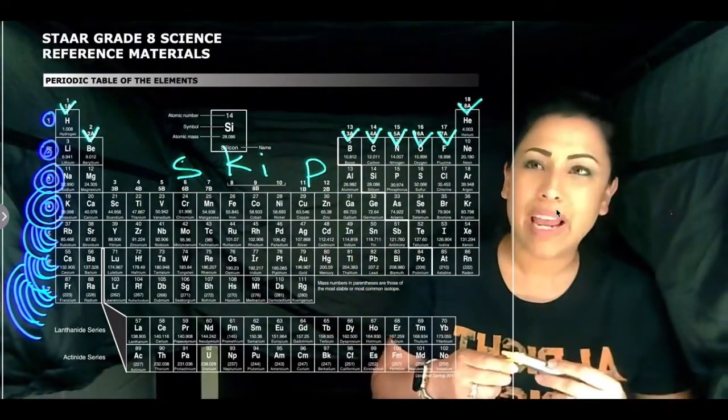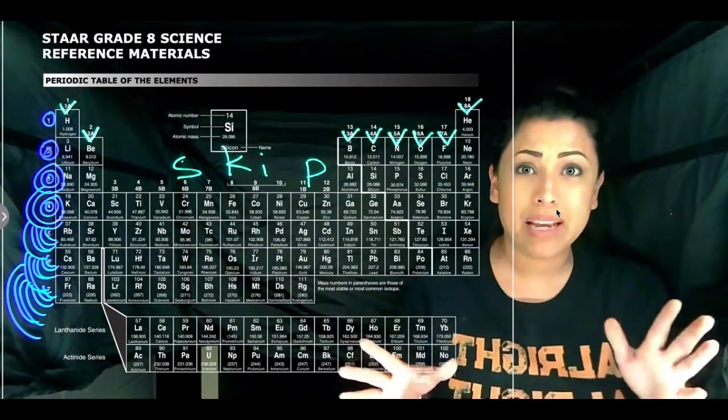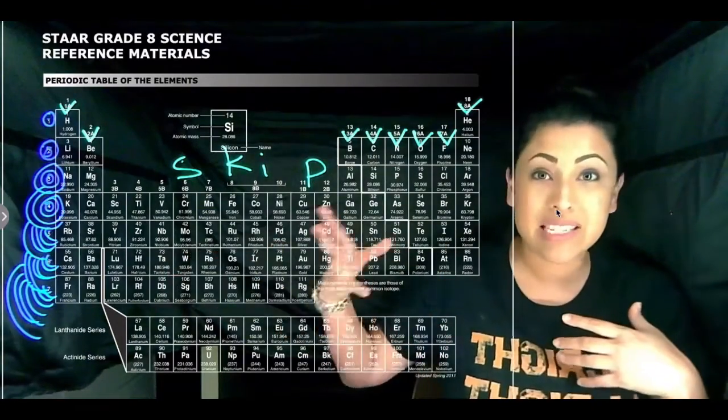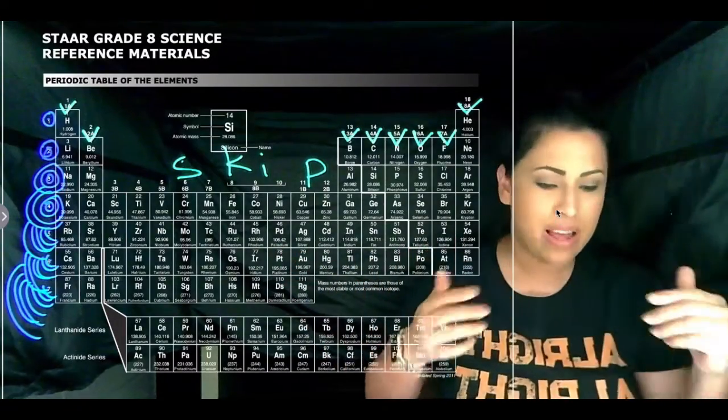Now 18 has eight valence electrons, which means it's a happy place. All of these elements, all these atoms, want to get to eight. Eight is happy, full, nice, in their happy place.